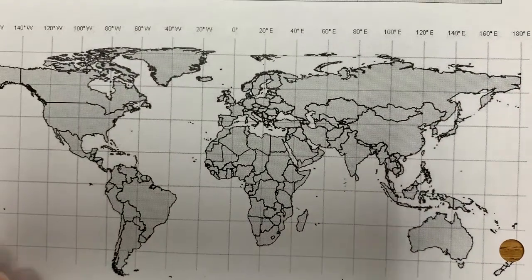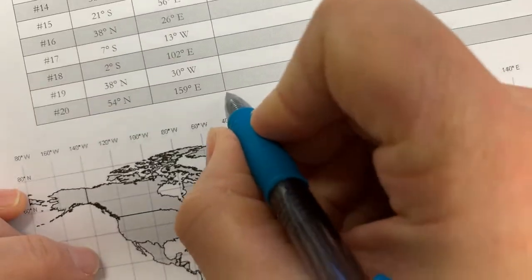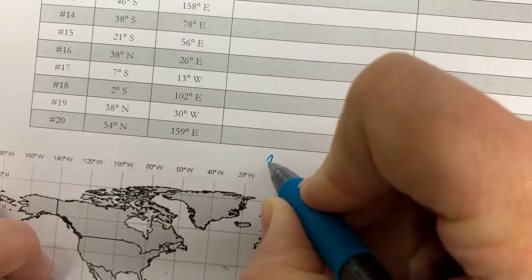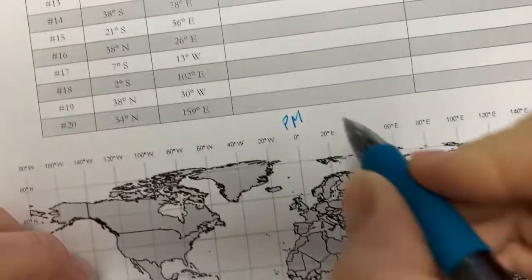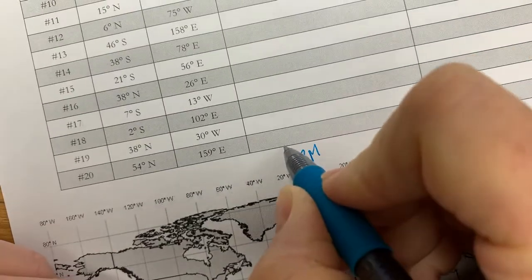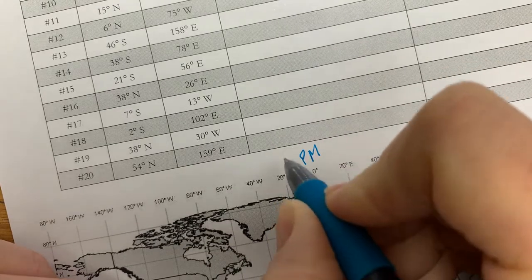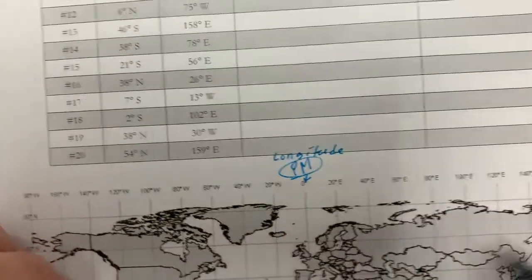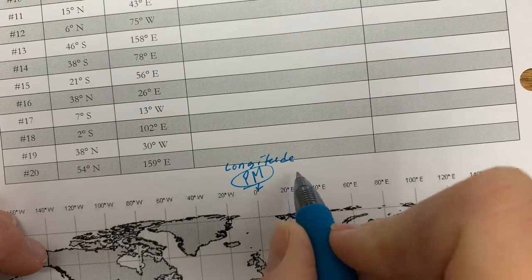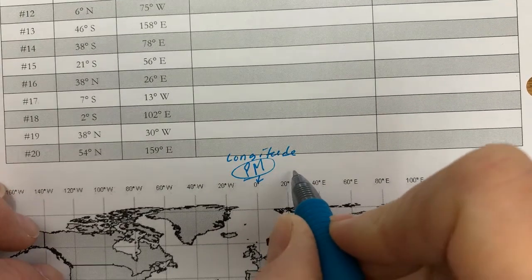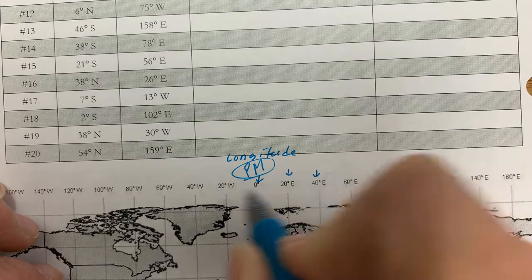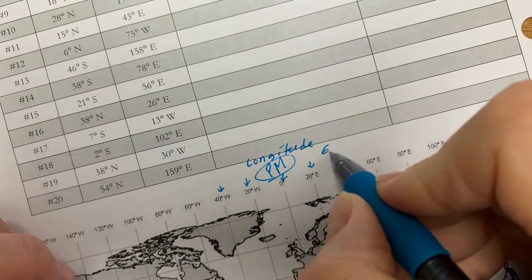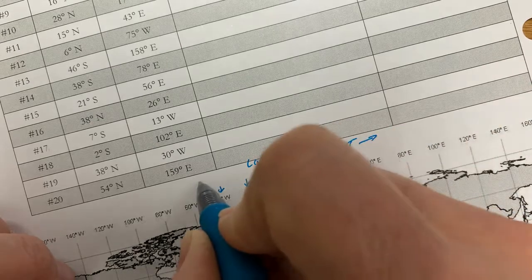Come down to our map here. First of all, longitude is your position east or west of the prime meridian, and the prime meridian is here. So I'm going to go ahead and write longitude here. Anything to the east of the prime meridian is east longitude, and anything west of the prime meridian is west longitude.